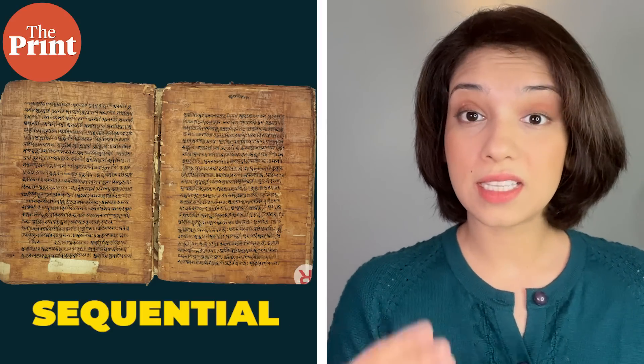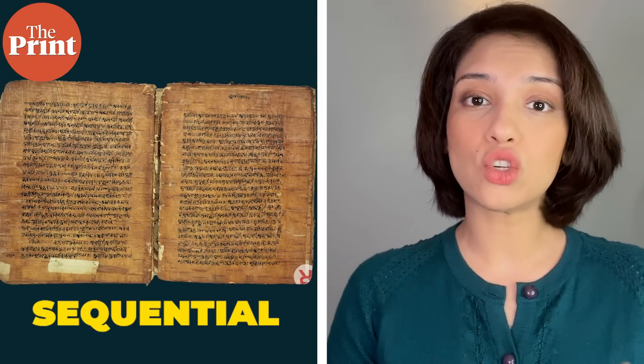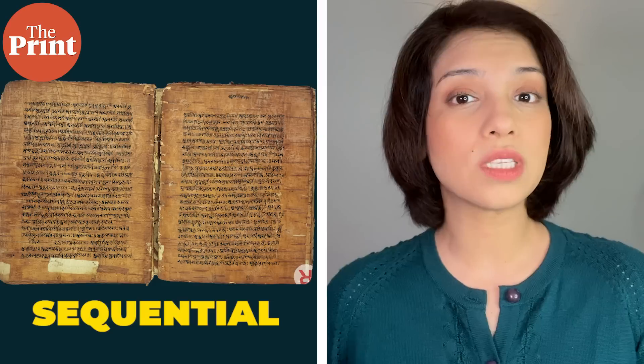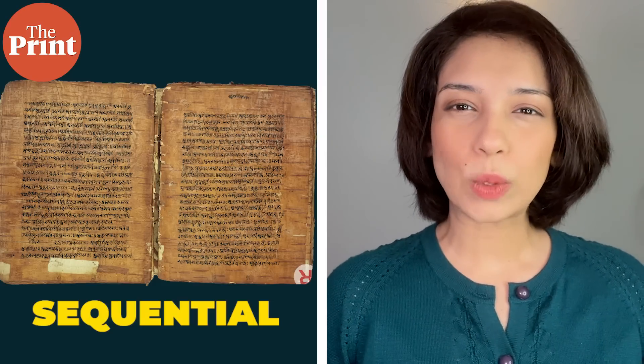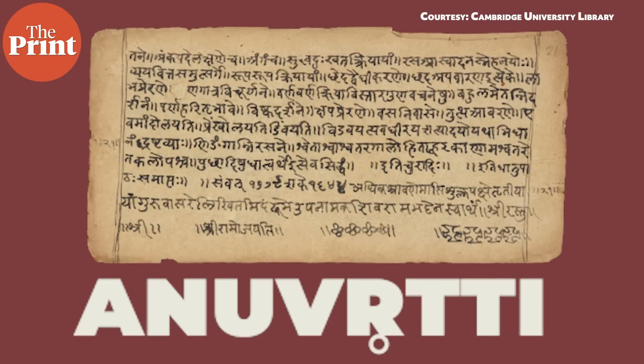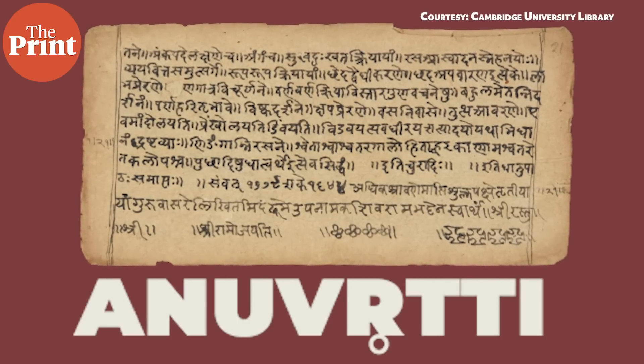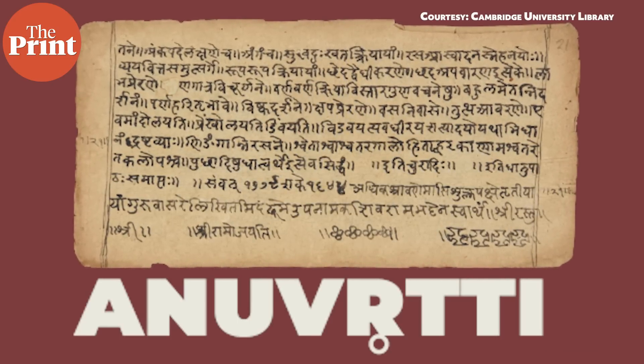These sutras in the book are sequential, meaning each rule is built upon the preceding set of rules in a linguistic device called anuvritti, or the continuation of one rule into the next. This means the sutras use recall and reference keywords that were used previously. Sometimes it is also confusing whether a sutra references any previous rules at all, and other times it is unclear whether a rule needs to be continued to the next.